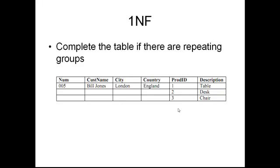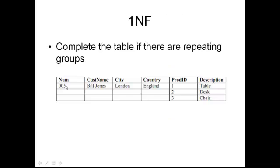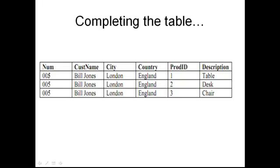The first normal form says that we need to complete a table if there are repeating groups. As you can see here, we have repeating groups in a product ID field which is 1, 2, and 3. So if you see any spaces and one field here with three different fields, it means that we have repeating groups. The thing to do is to complete the table with the fields over here. So we used to have only one record 005 with three product IDs.